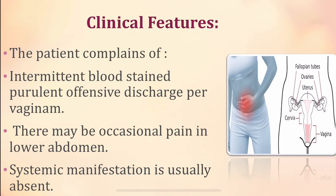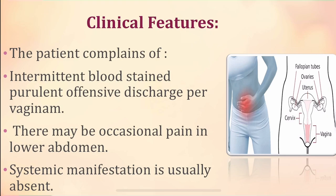Moving on to the clinical features: the patient presents with complaints of intermittent blood-stained purulent offensive discharge per vagina, and there will be occasional pain in the lower abdomen. Systemic manifestations like body ache, headache, fever, and vomiting will be absent. We have blood-stained purulent offensive discharge, which is intermittent, and abdominal pain.